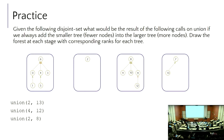Our first call asks us to union 2 and 13. We'll use the overall root to stand as the representative of each set. The representative of the set containing two is two — it's a country of one. Then we want to union it with 13. What is the representative of the set with 13 in it?